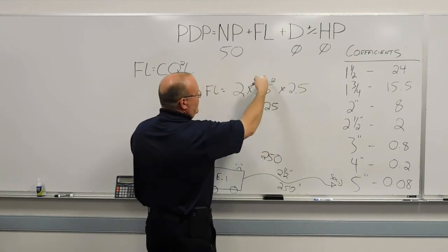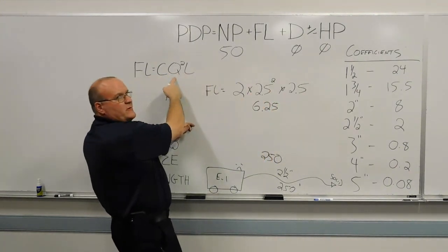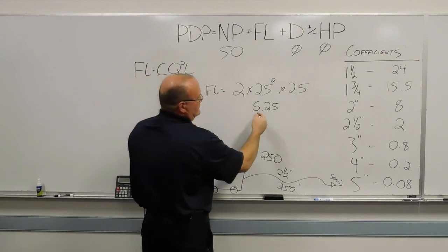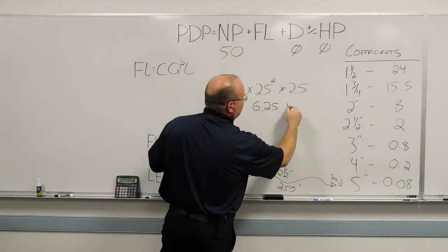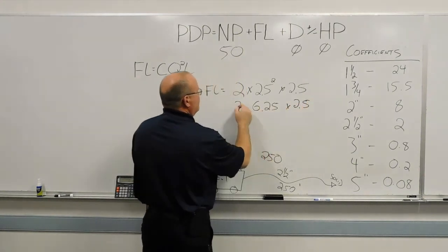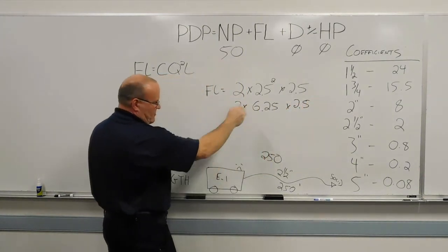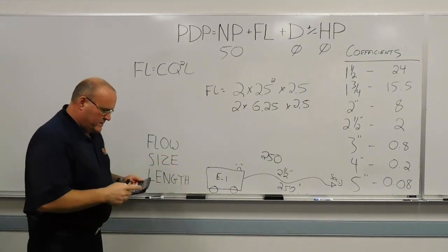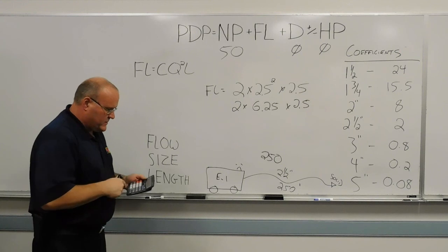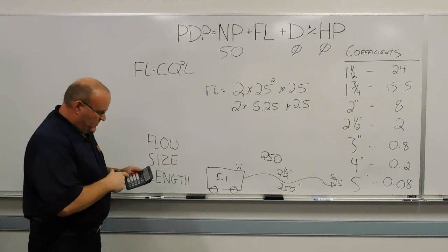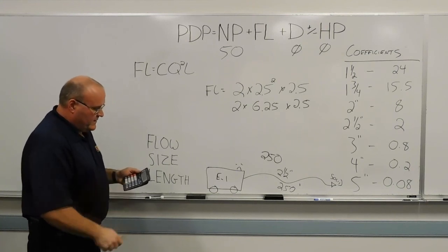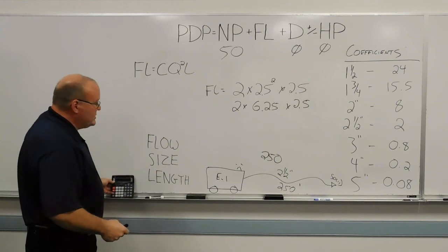So 2.5 squared, the Q squared part of this, 250 gallons a minute, divided by 100, 2.5. The square of that is 6.25. And then that remaining formula is what we use to get our friction loss. So 2 times 6.25 times 2.5, 31.25.